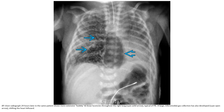AP chest radiograph 24 hours later in the same patient shows more extensive bubbly and linear lucencies throughout the right lung, typical of PIE. A large pneumomediastinal gas collection has also developed.